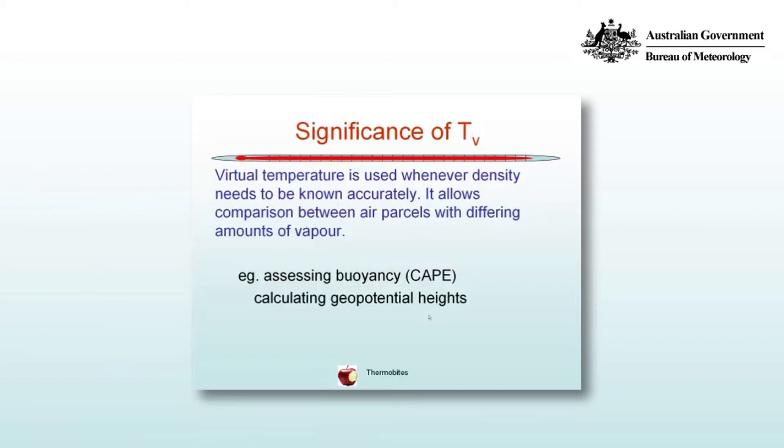So the virtual temperature is used whenever density needs to be known with some degree of accuracy, because it's not simply a measure of the temperature but also the amount of water vapor that's contained. And it allows the comparison between air parcels with differing amounts of vapor. And it's particularly useful when calculating things like buoyancy, which we'll see later on in the context of thunderstorms and a parameter known as CAPE, and things known as geopotential heights, which are the heights of particular surfaces.